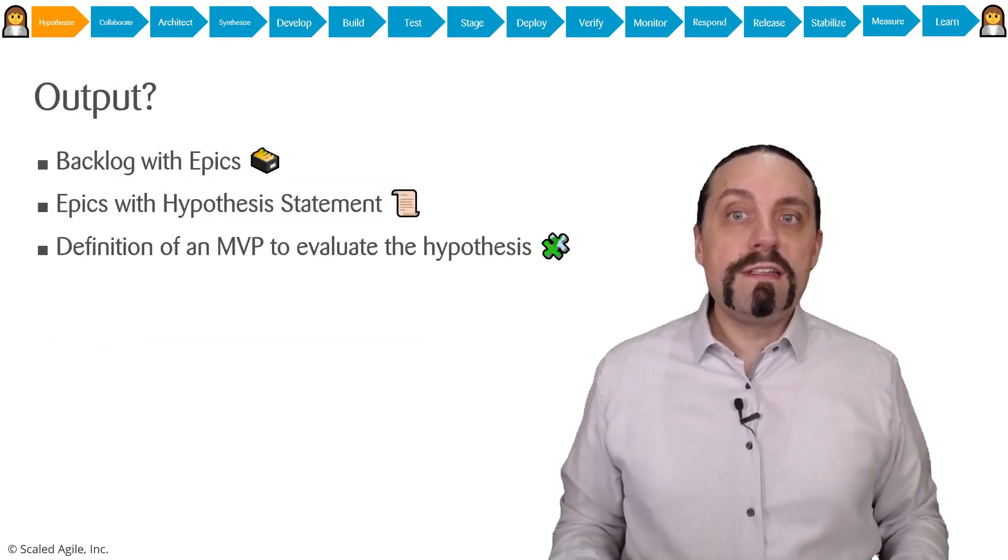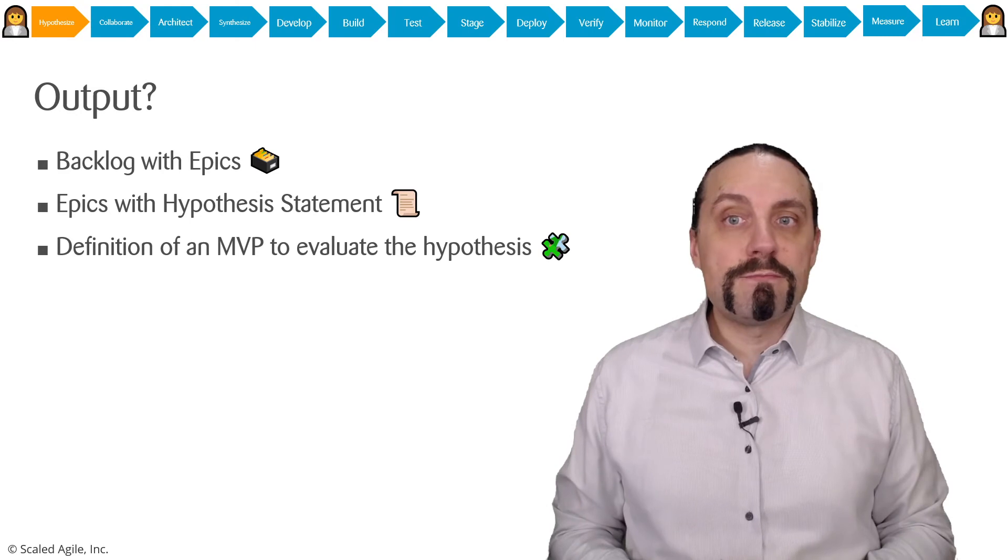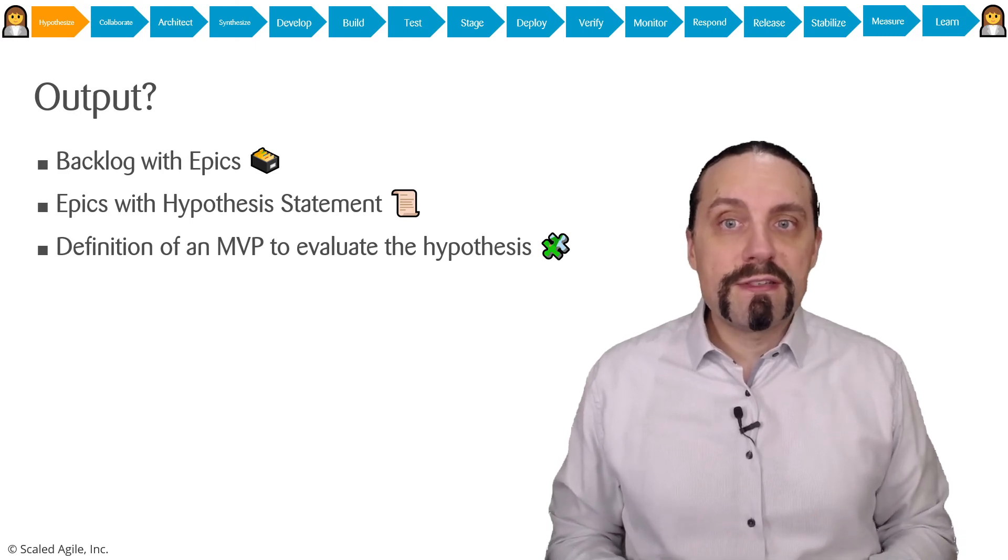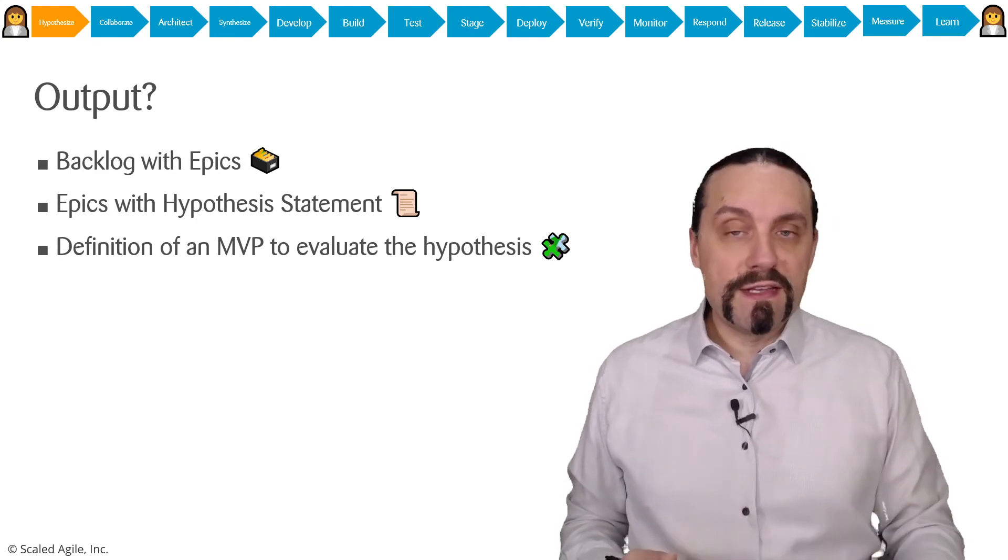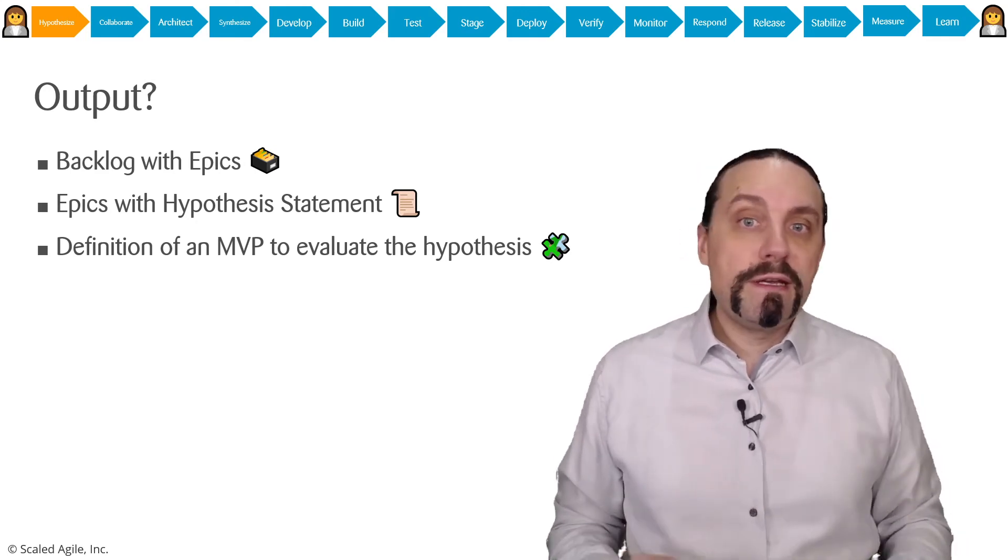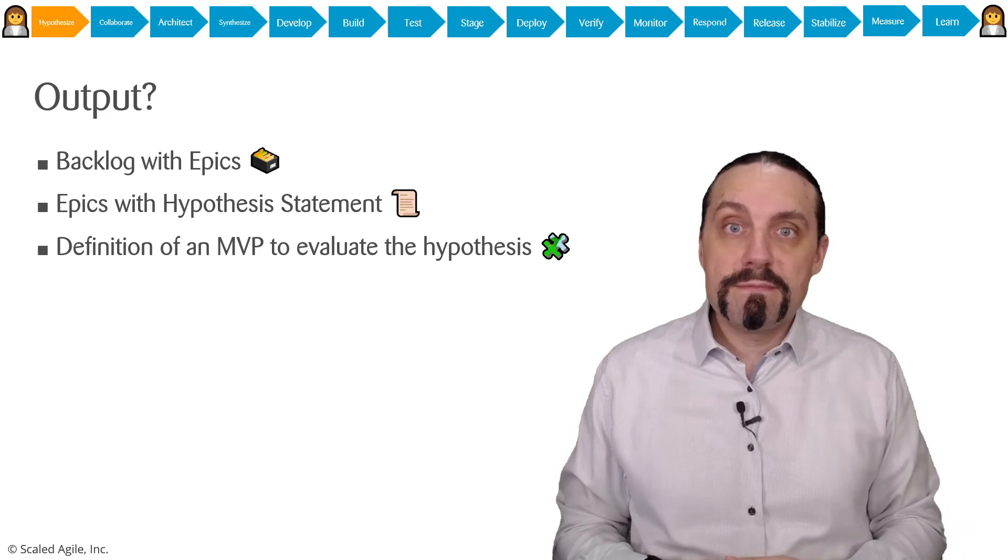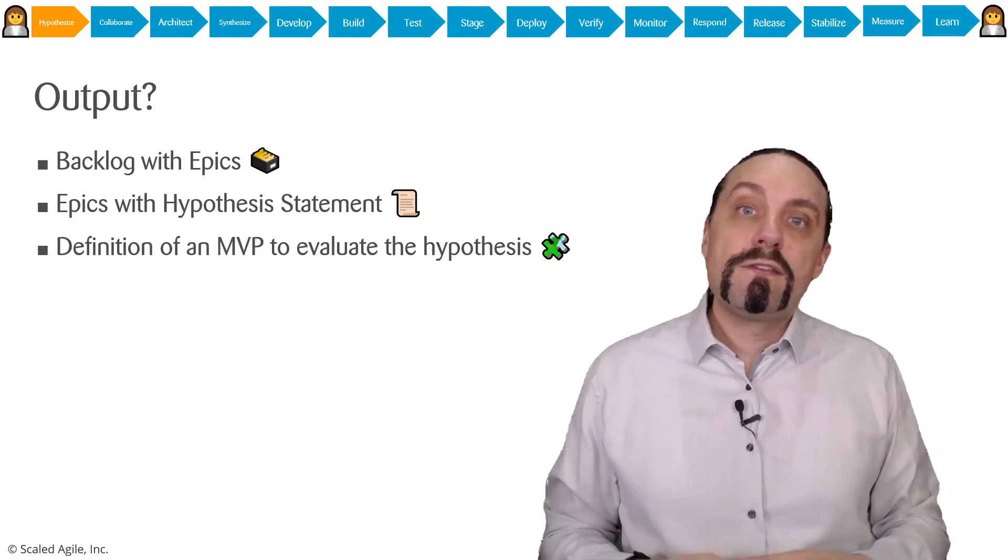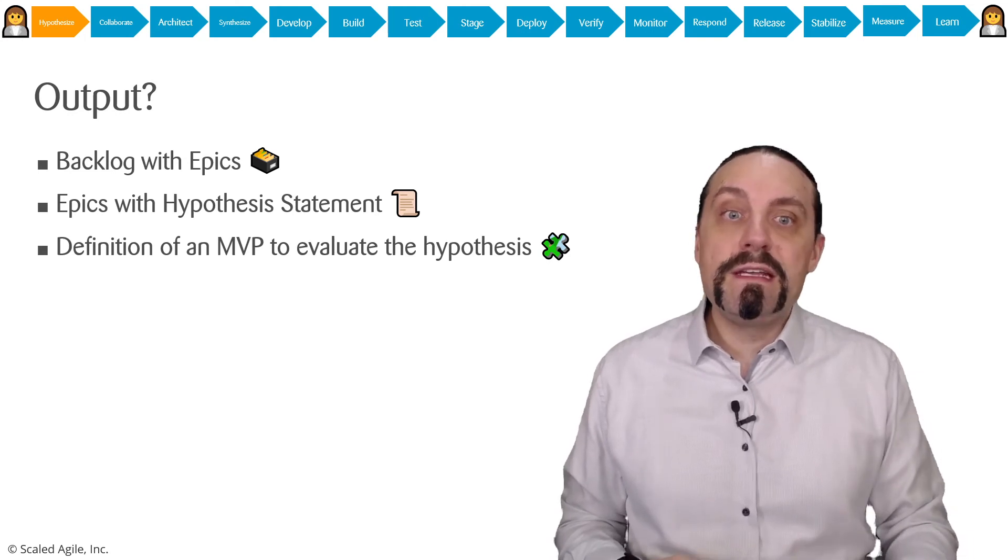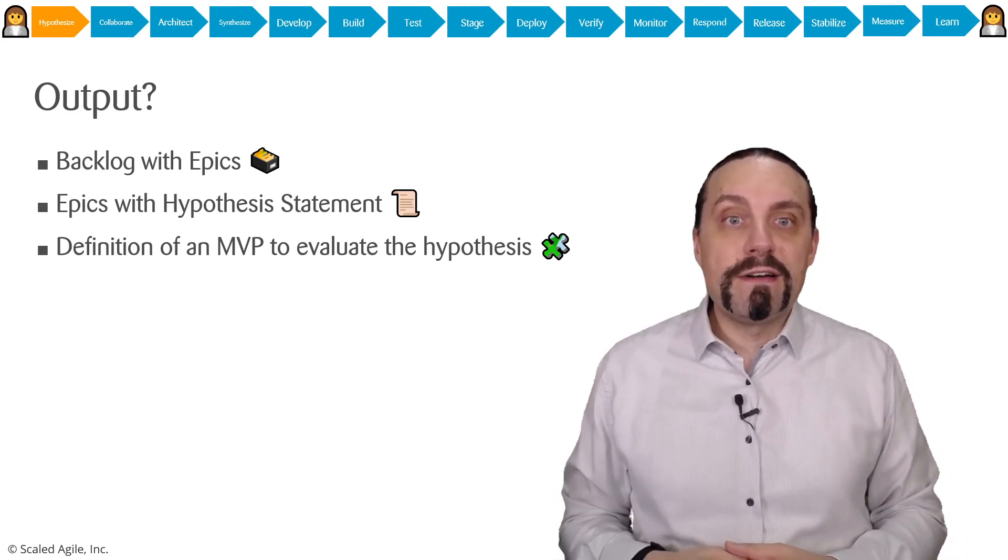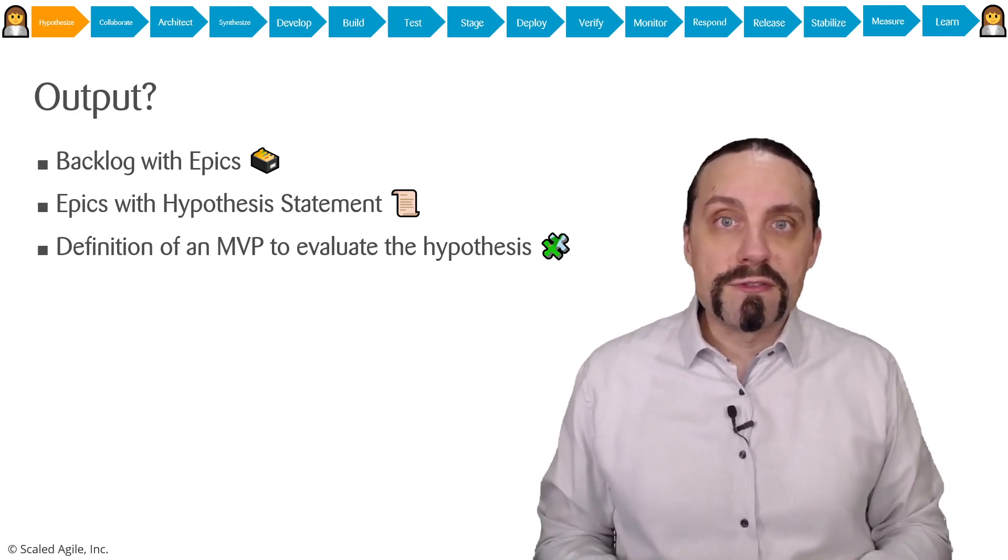So what is the output of this process step hypothesis? So after this process step we have a backlog with epics and an epic has a hypothesis statement behind it. And through the lean business case we have also defined the MVP which then gets evaluated through the hypothesis statement.